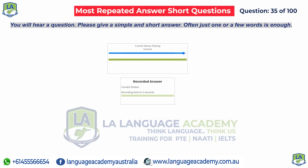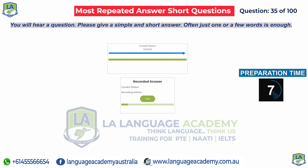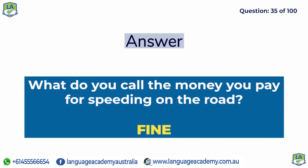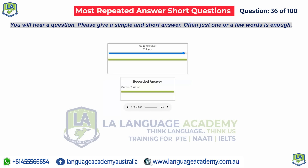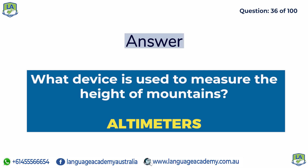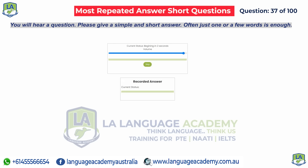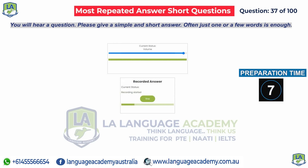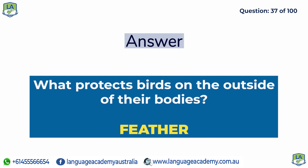What do you call the money you pay for speeding on the road? Fine. What device is used to measure the height of mountains? Altimeters. What protects birds on the outside of their bodies? Feather.